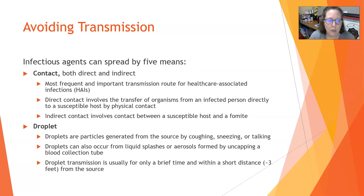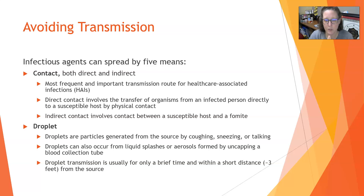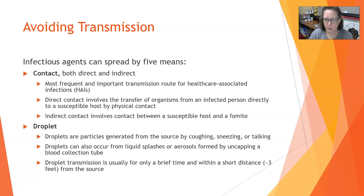Droplet transmission is the next means. Droplets are particles generated from the source by coughing, sneezing, or talking, and can also occur from liquid splashes or aerosols formed by uncapping a blood collection tube. When uncapping a blood collection tube, always uncap it away from you — not towards you — because if it aerosolizes it can go straight into your nose, mucous membrane, face, and eyes. Droplet transmission is usually only a concern for a brief time and within a short distance, about three feet from the source. Wearing a mask protects against droplet transmission, and social distancing of six feet was aimed at preventing this type of virus transmission.